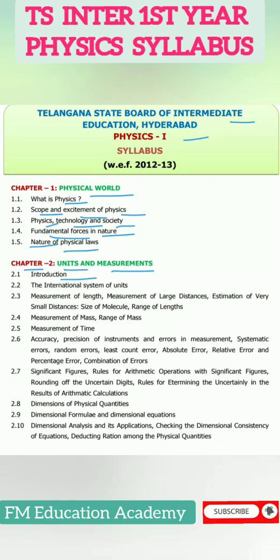Chapter 2, Units and Measurements: Introduction, the International System of Units, measurement of length, measurement of large distances, estimation of very small distances, size of molecule, range of length, measurement of mass, range of mass, measurement of time, accuracy, precision of instruments and errors in measurement, systematic errors, random errors, least count error, absolute error, relative error and percentage error, combination of errors, significant figures.